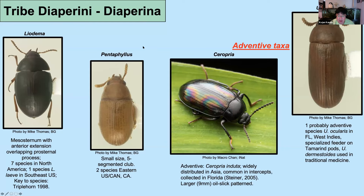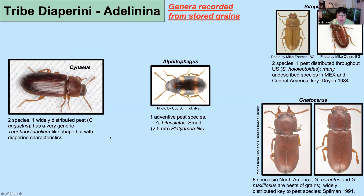In the US there's only a single species of Leodema. Pentophilus is a globally distributed genus characterized by a smaller five-segmented antennal club. There are also adventive species to the US: Seropria is a larger-bodied Diaperine, many with beautiful oil-slick patterning — it's been intercepted and was caught in the wild by Warren Steiner in Florida. The genus Eulomoides includes not only the adventive Eulomoides ocularis found in Florida and the West Indies, but also commonly intercepted Eulomoides dermestoides — people try to bring it in because it's used as a traditional medicine for treating asthma.